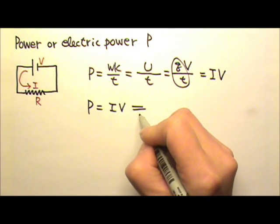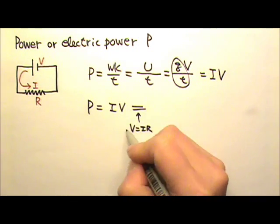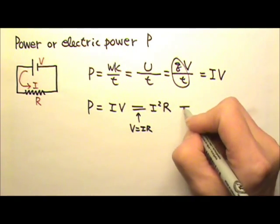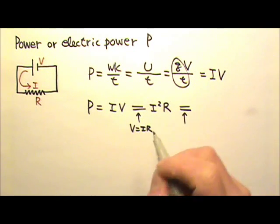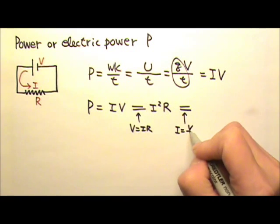And if I replace the voltage with I times R, using Ohm's law, I will get I squared R. Or if I want, I can replace the I instead with V over R.